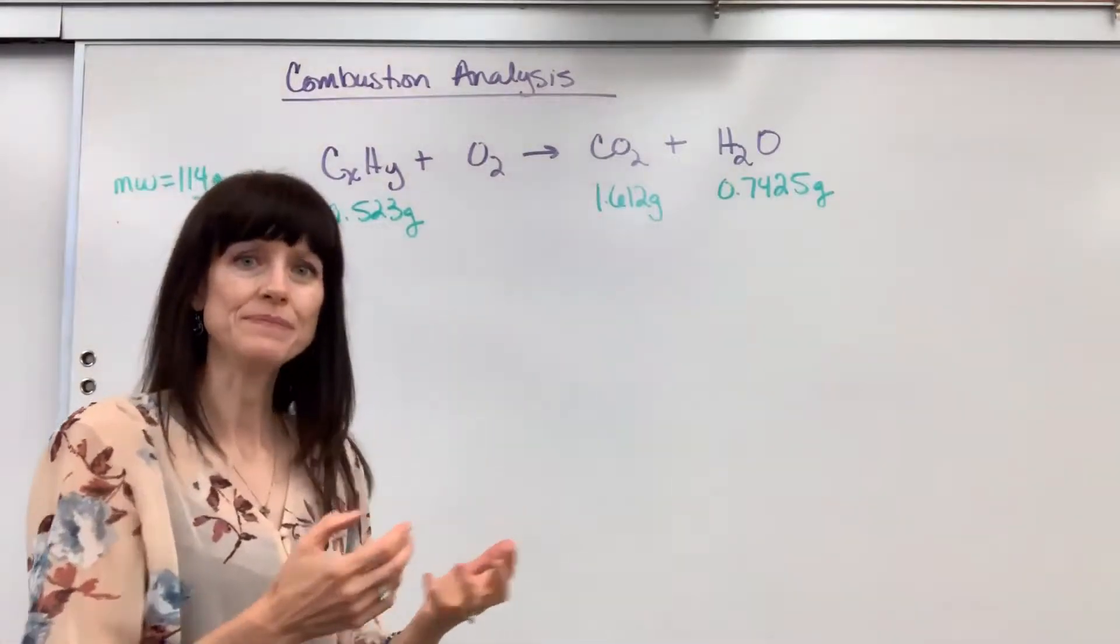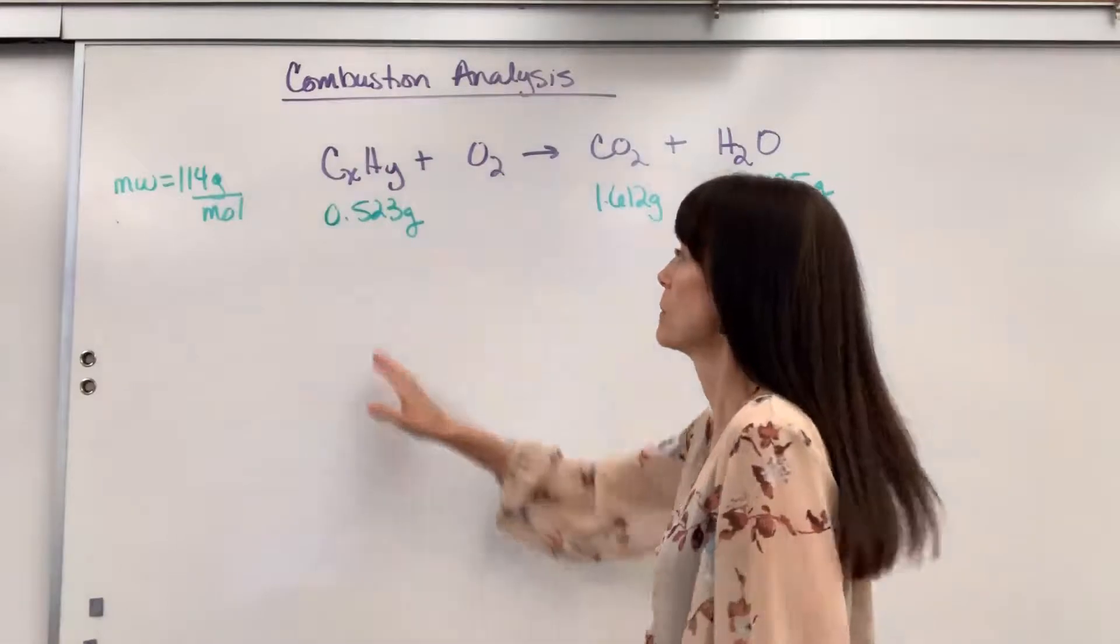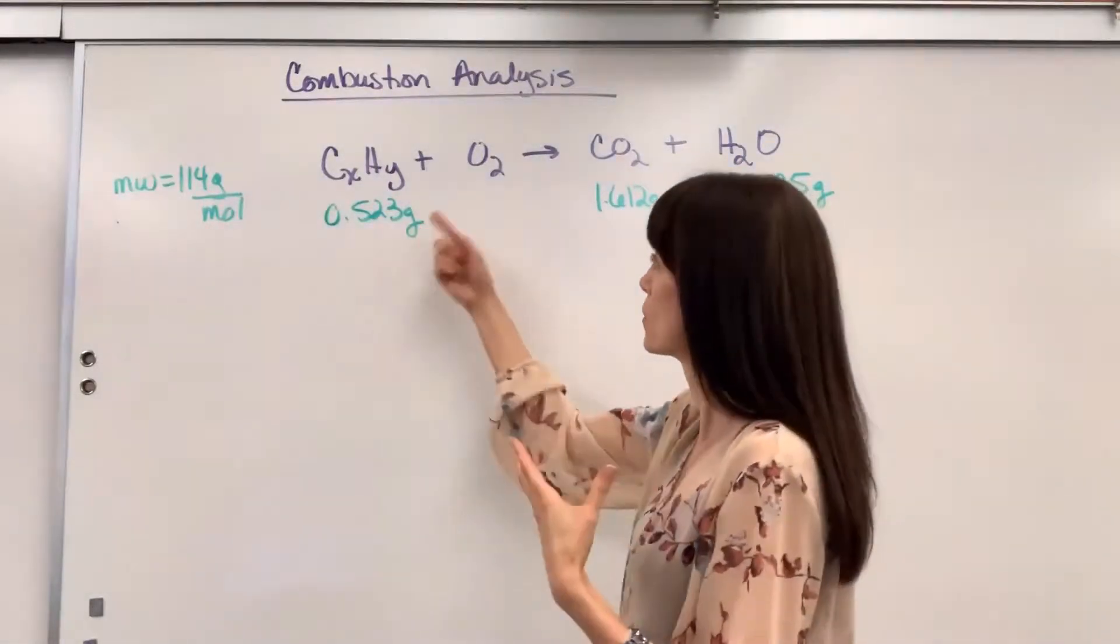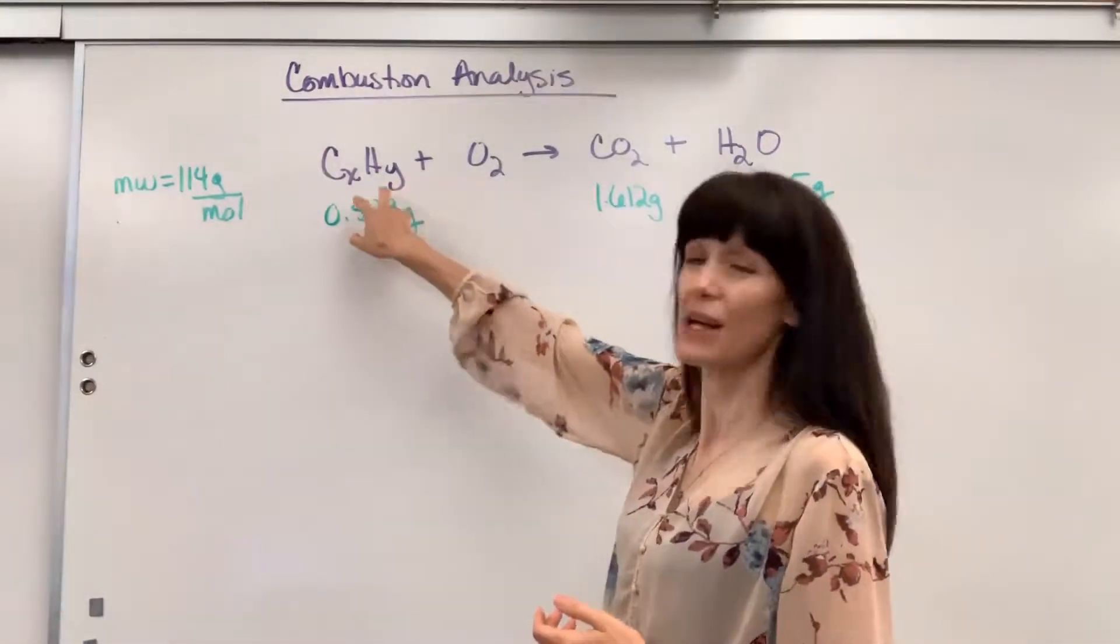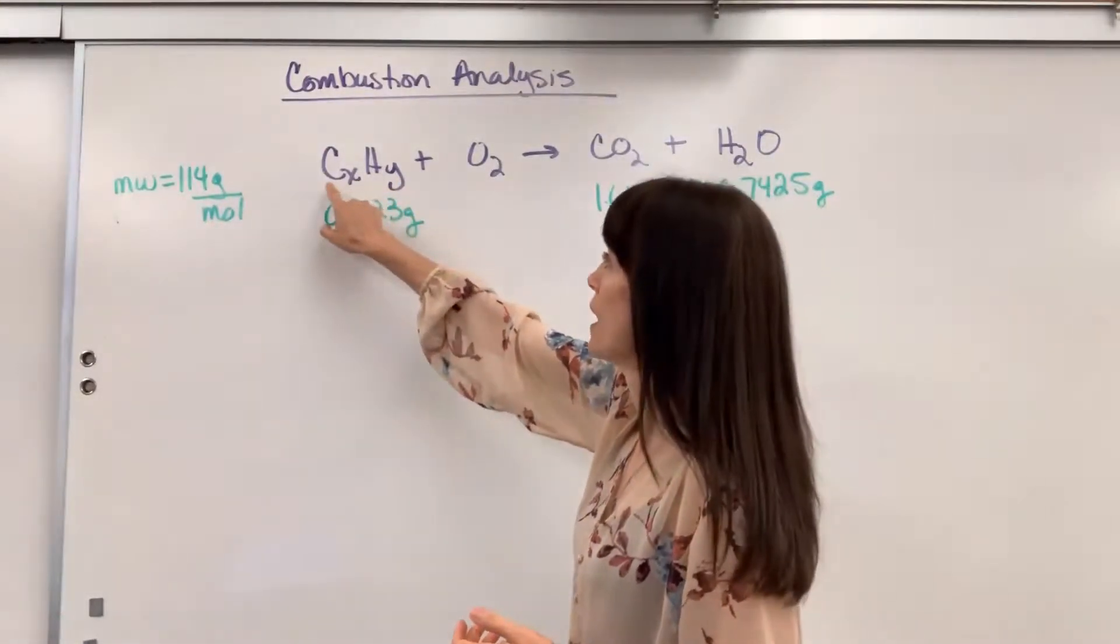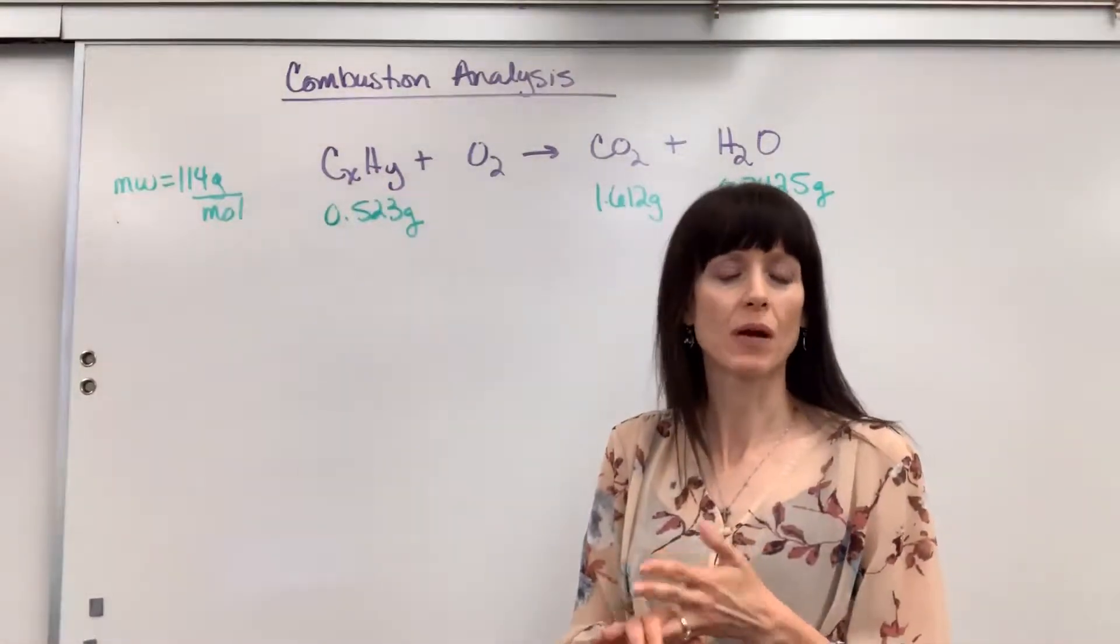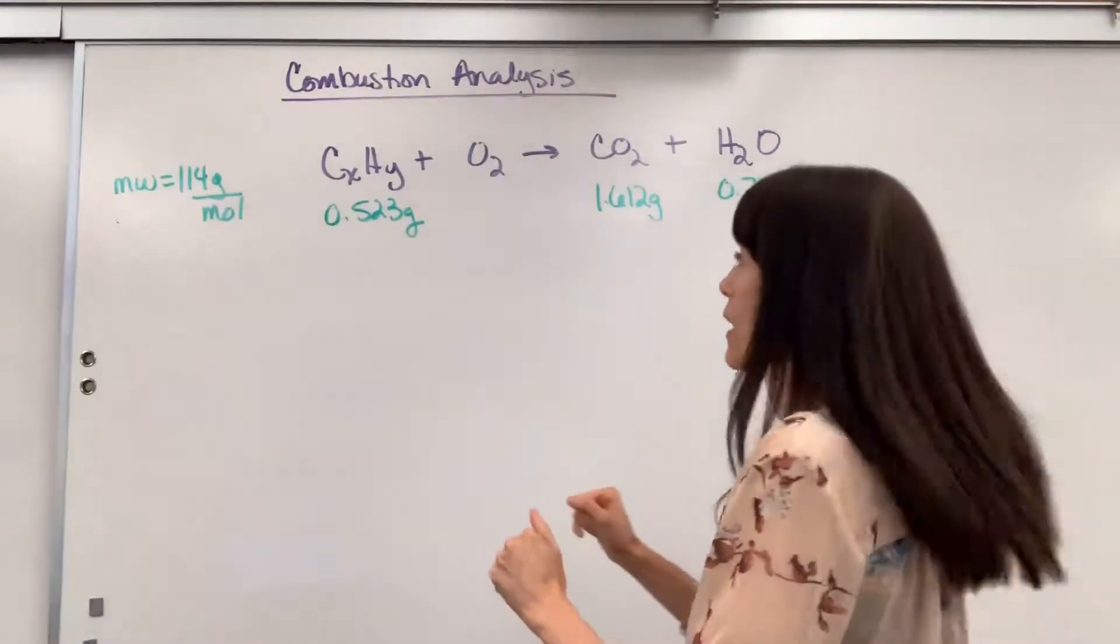Stoichiometry, how does this work? Let's go to our beginning information. We have some unknown hydrocarbon and we know the amount, 5.23 grams of, notice how I wrote this, C sub X H sub Y. I know there's a hydrocarbon, carbon and hydrogen, but I don't know how much of each.